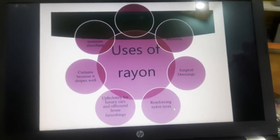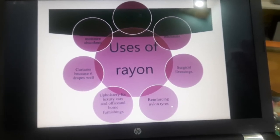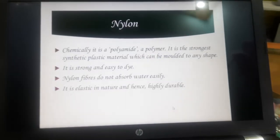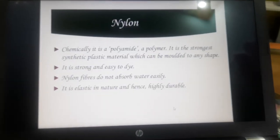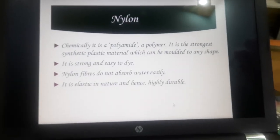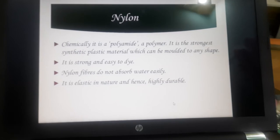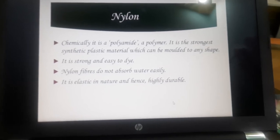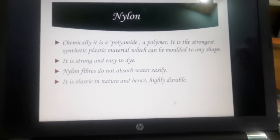Rayon is also mixed with glass for making helmets. It is used for making jackets and track suits, surgical dressings, reinforcing nylon tires, and upholstery such as curtains.